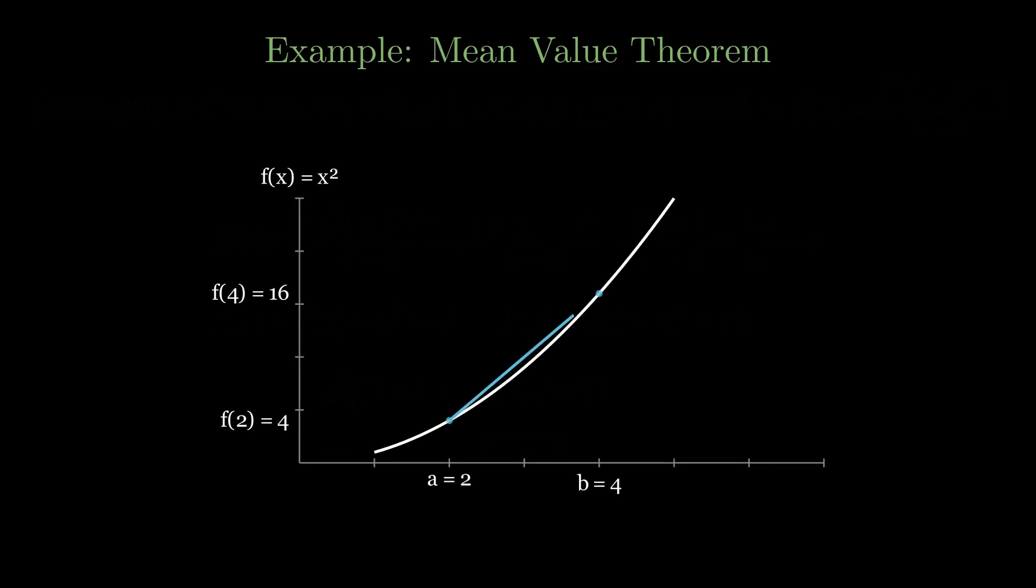Now visually, you can see that at the point x equals 3 or c equals 3, indeed the average rate of change and the slope of the tangent line are the same.